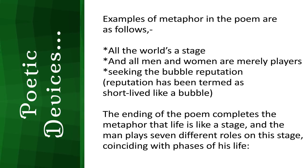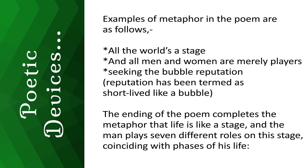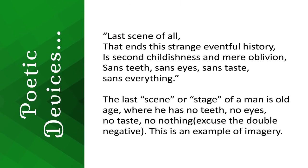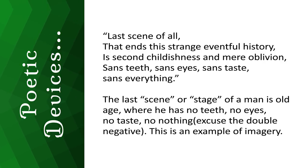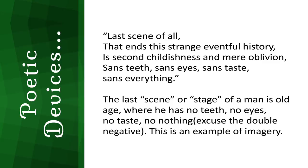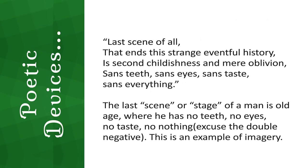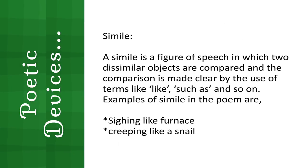The ending of the poem completes the metaphor that life is like a stage and man plays seven different roles coinciding with the phases of his life: 'Last scene of all that ends this strange eventful history is second childishness and mere oblivion, sans teeth, sans eyes, sans taste, sans everything.' The last stage of a man is old age where he has no teeth, no eyes, no taste — nothing. This is also an example of imagery.